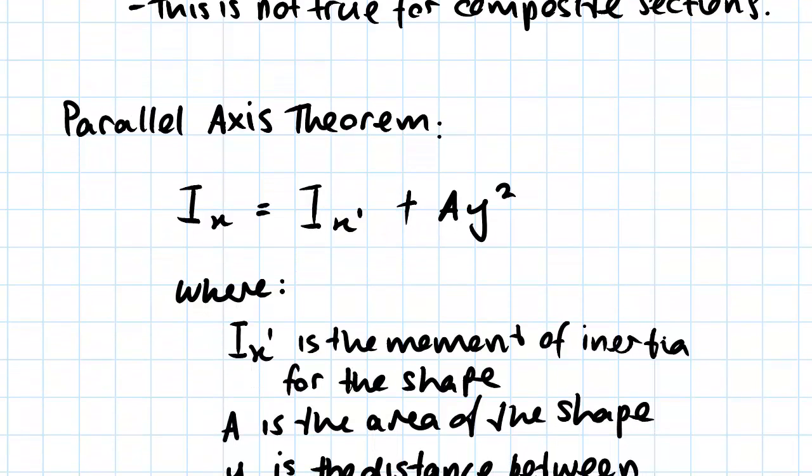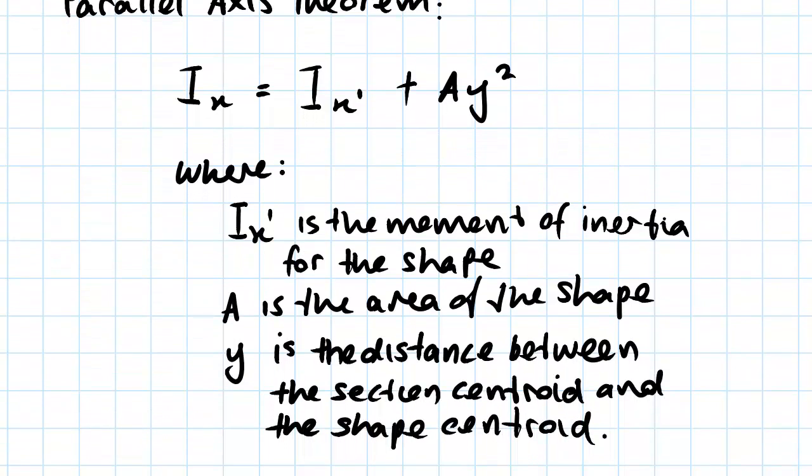I'll just introduce this. Ix' is the moment of inertia for the individual shape. When we're breaking down a composite section into its individual shapes, Ix is the moment of inertia for one of the shapes. A is the area of that shape, and y is the distance between.